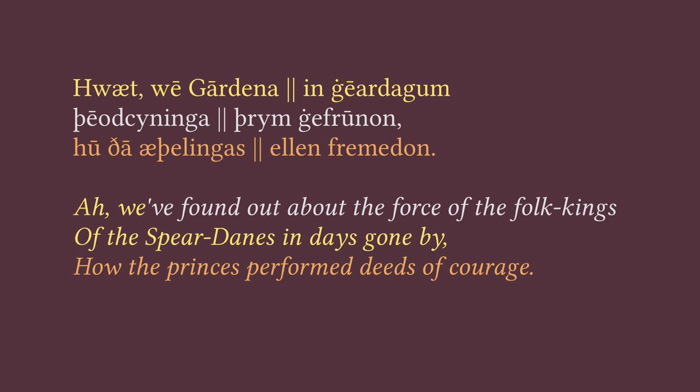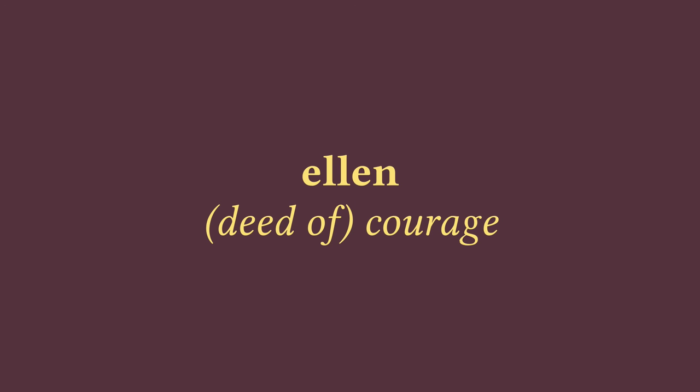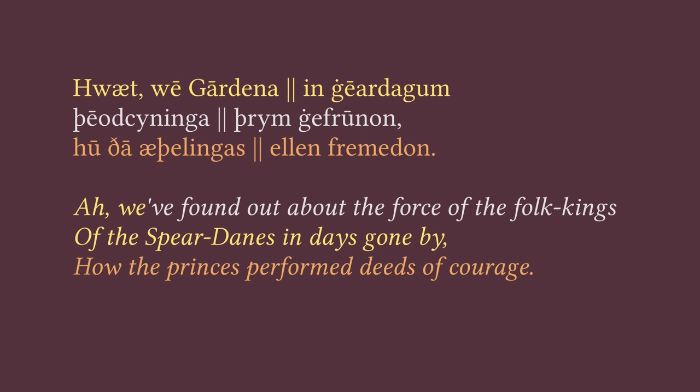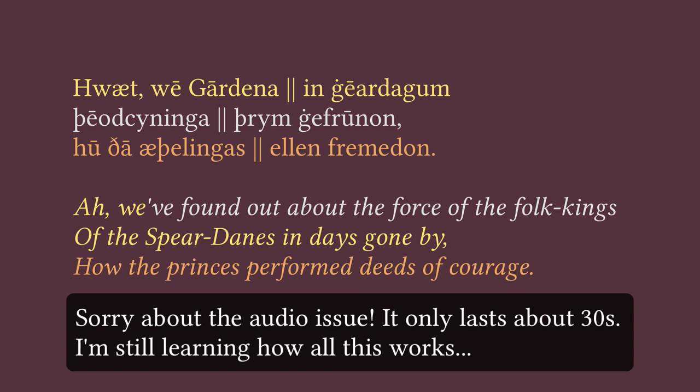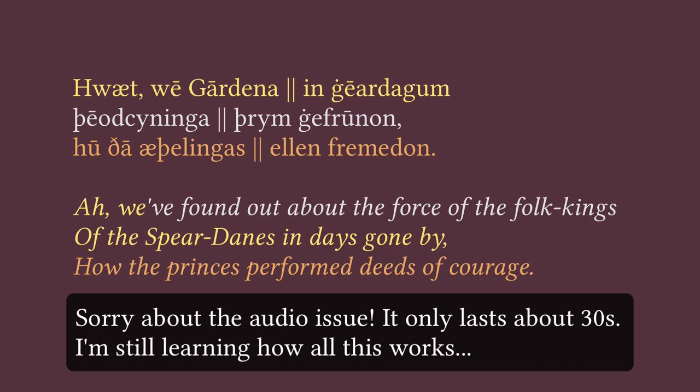So our clause starts out: 'how the princes did something.' What did the princes do? The princes 'ellen fremedon.' The word 'ellen' here means 'courage' or 'strength,' and it could also be in the plural — it's the same in singular and plural — so we'd want to translate it as 'deeds of courage' rather than 'courages.' And here again we see how the verb doesn't show up where we'd expect it in modern English. We'd expect 'how the princes did something,' rather than 'how the princes something did.' In other words, the object of the verb — the thing that they did — shows up before the verb in Old English in this sentence. Old English grammar is, in this regard, much more like modern German than modern English — just like in modern German, Old English verbs show up after their objects in certain contexts.